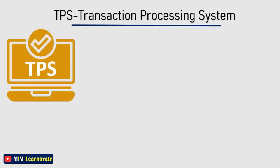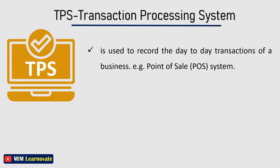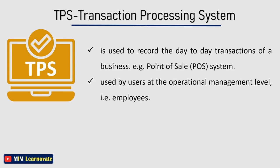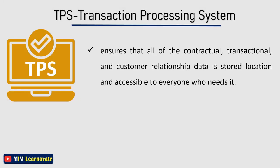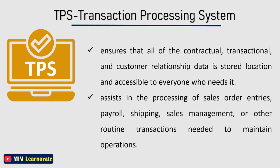Transaction Processing System is used to record the day-to-day transactions of a business. An example is a Point-of-Sales System, used to record daily sales. A transaction processing system ensures that all contractual, transactional, and customer relationship data is stored in a safe location and accessible to everyone who needs it. It also assists in processing sales order entries, payroll, shipping, sales management, or other routine transactions needed to maintain operations.